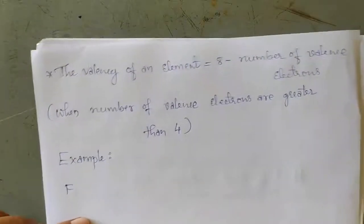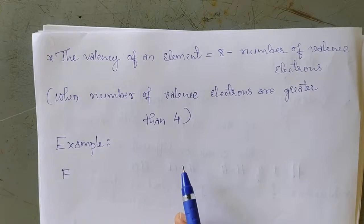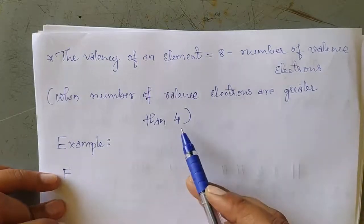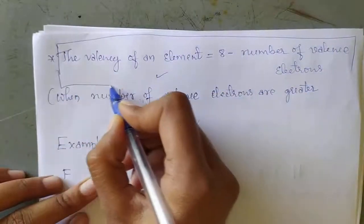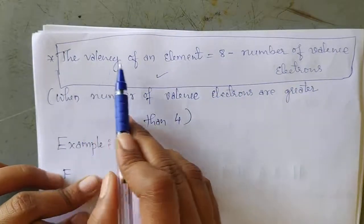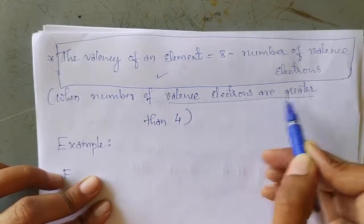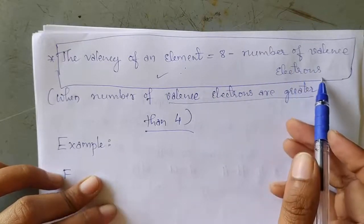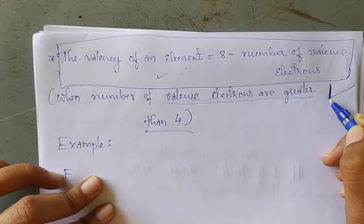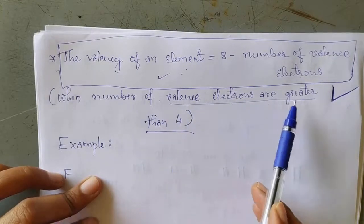But it is not the same in case of elements when the number of valence electrons are greater than 4. In case of elements in which the number of valence electrons are greater than 4, we have to use this formula: valency of an element equals to 8 minus number of valence electrons.